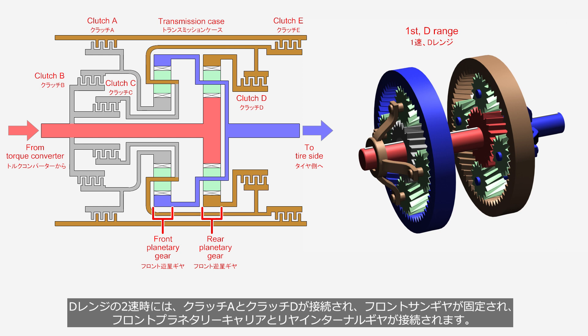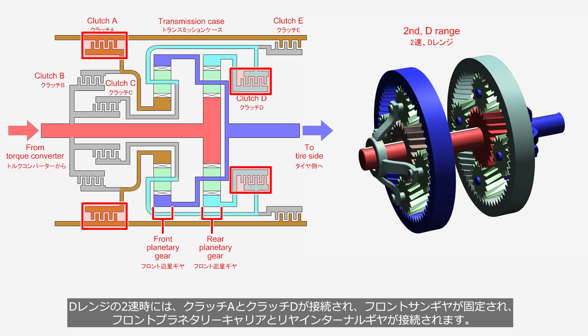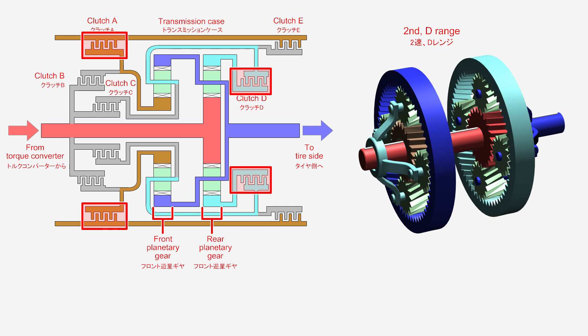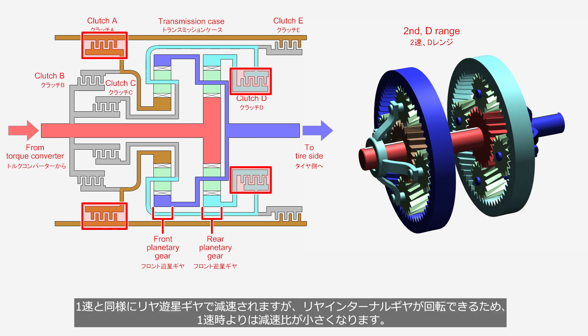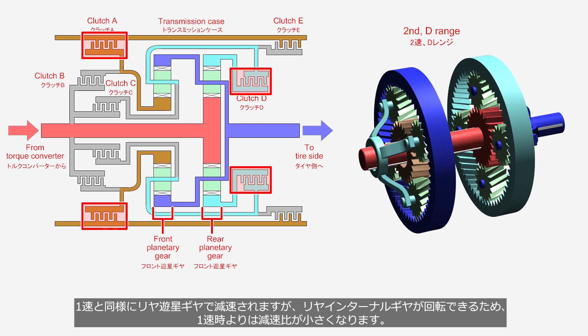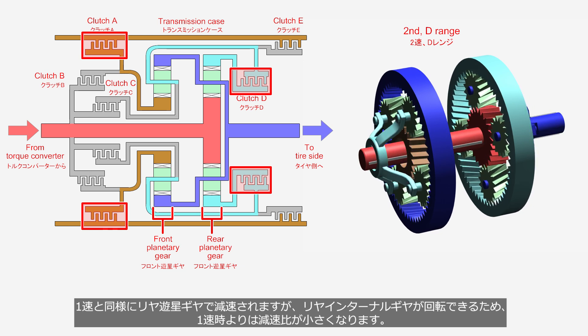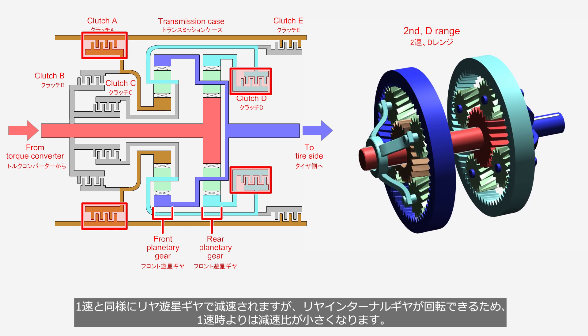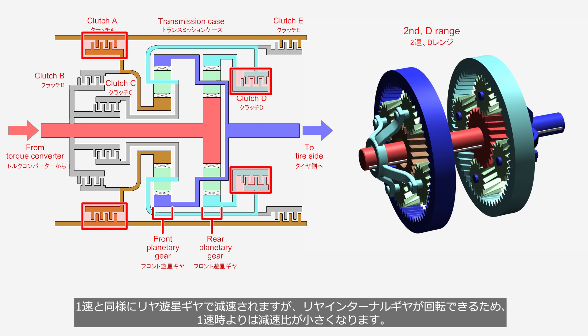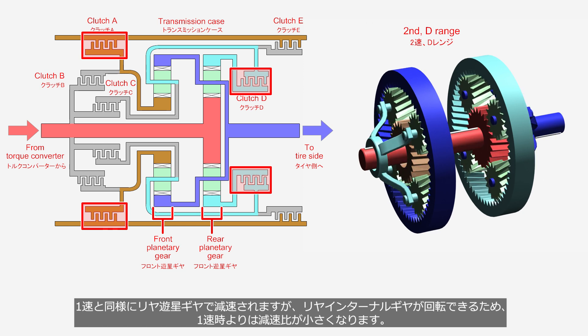In the second gear of the D range, clutch A and clutch D are engaged, the front sun gear is locked, and the front planetary carrier is connected to the rear internal gear. Similar to the first gear, the rear planetary gear reduces the speed, but the rear internal gear can rotate, resulting in a lower reduction ratio compared to the first gear.